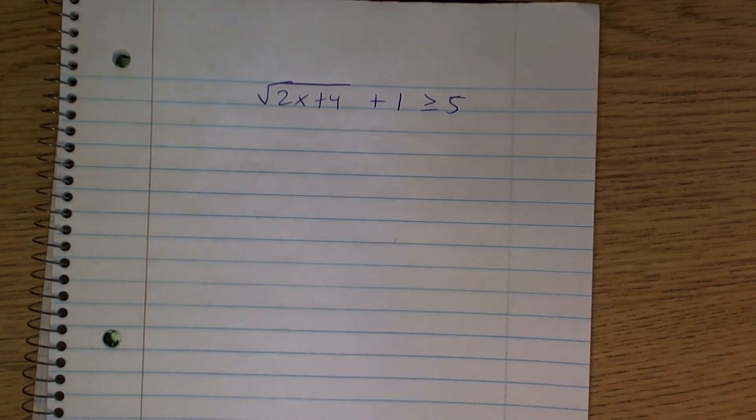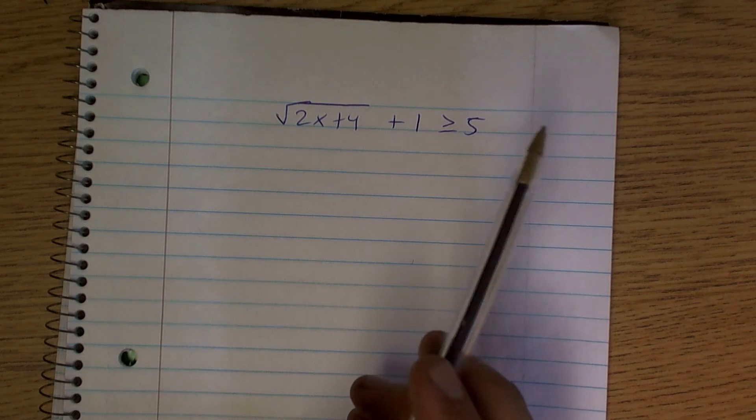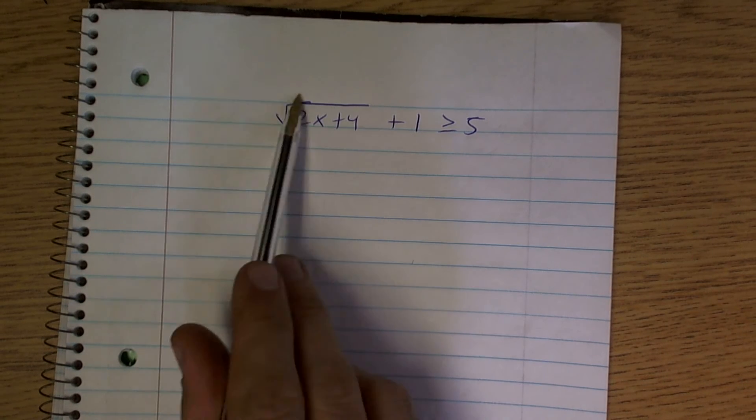Exactly what your mistake was on this. You did the exact right property that you needed to do. The difficult thing though, what you did is you just squared just this.